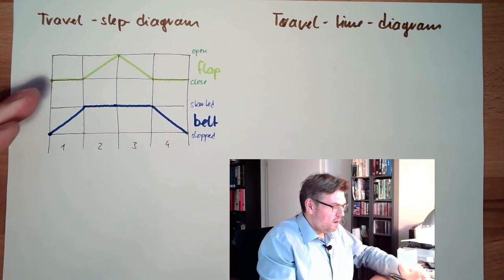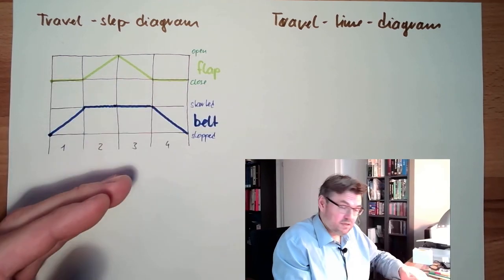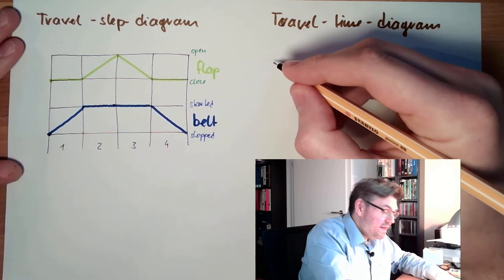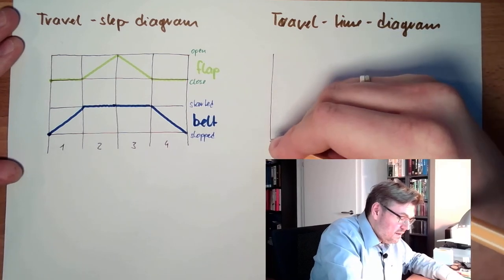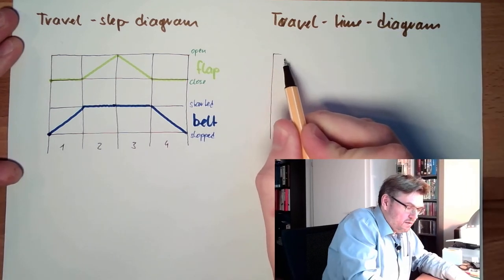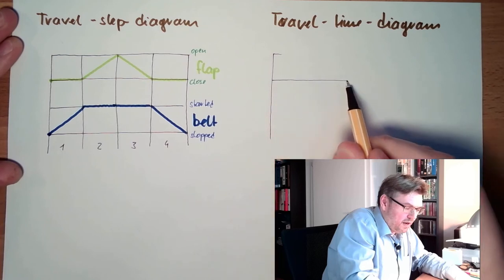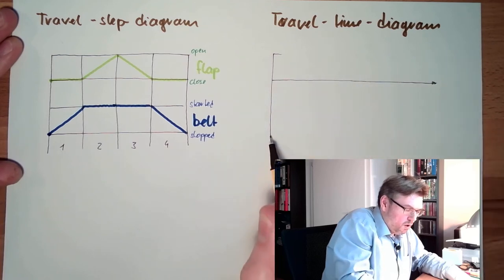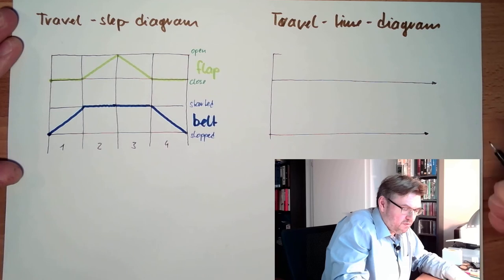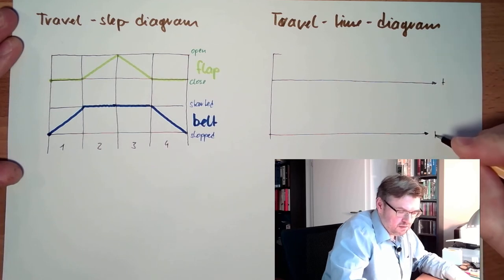However, this time, on this axis, on the x-axis, it's not the steps, it is the time, really. So there are two time diagrams. One time diagram, second time diagram, so there is t, the time.